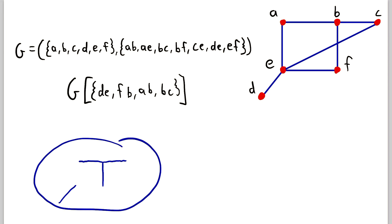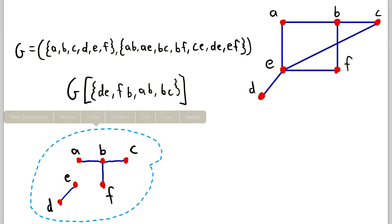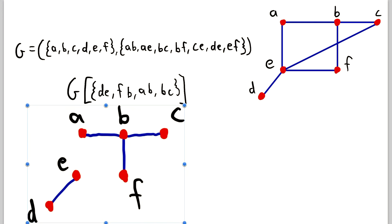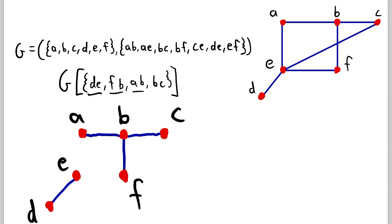Because it's an edge-induced subgraph, we have to include the vertices incident with these edges. So we have vertex D, vertex E, F, B, A, and C. I've tried to maintain a similar shape to how the graph appears in the original. So labeling these: D, E, F, B, A, and C. This is the subgraph of G induced by the edge set containing DE, FB, AB, and BC.